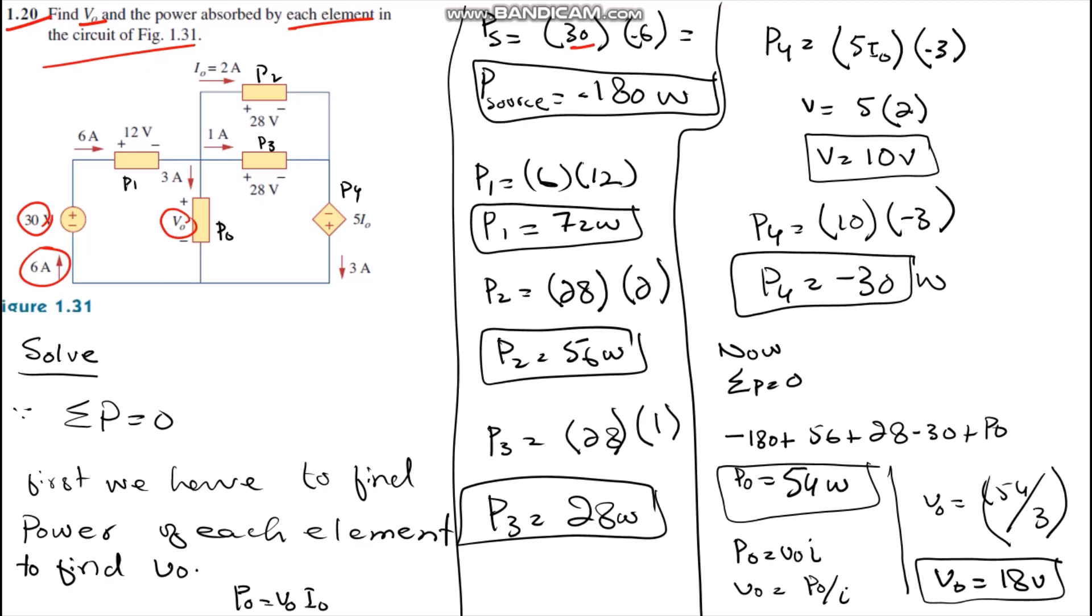P1, the power of element 1, has entering current of 6 amperes from the positive terminal and 12 volts, both positive, therefore it is 72 watts.